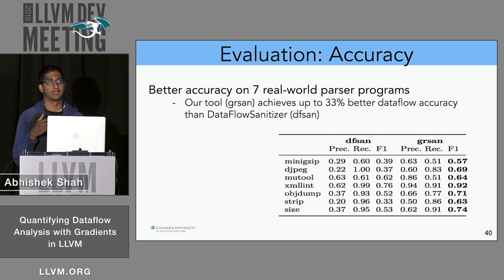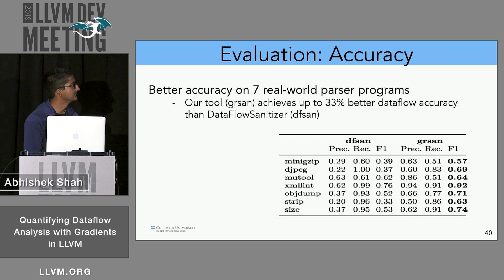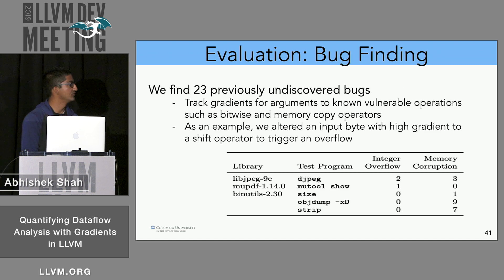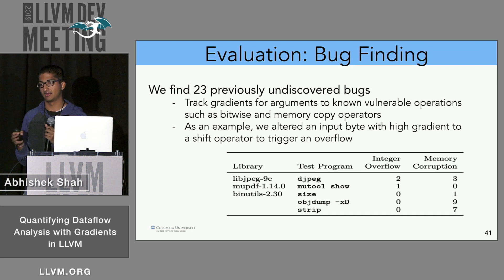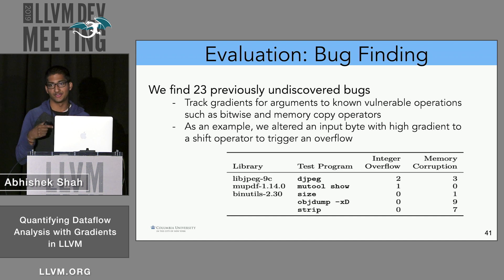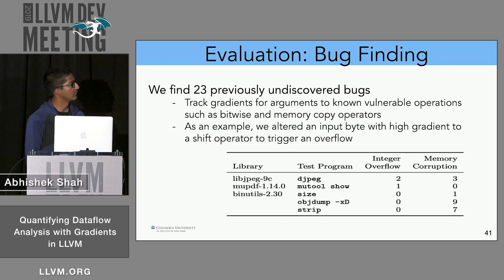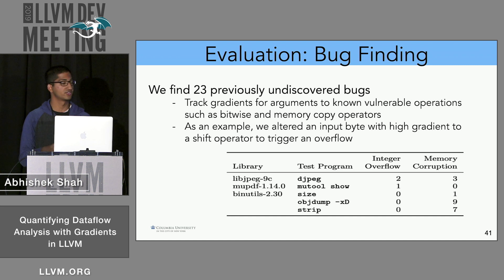More interestingly, we can use this tool to find bugs. Because we can quantify data flows, we can order them. We pick data flows with the highest gradients and try to edit them to trigger memory allocation errors — for example, if you can edit the input to a vulnerable operation like malloc, or overflow a bitwise operation. We tracked gradients for arguments to known vulnerable operations such as bitwise and memory allocation operations, and were able to find a decent number of bugs.